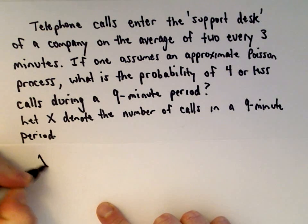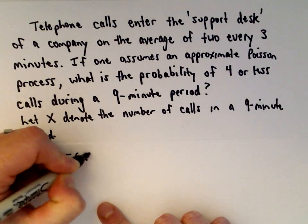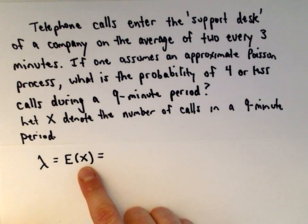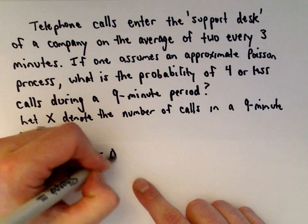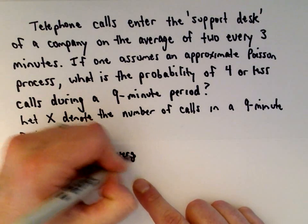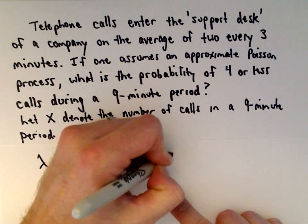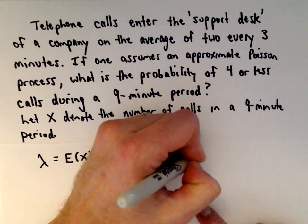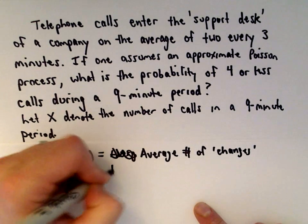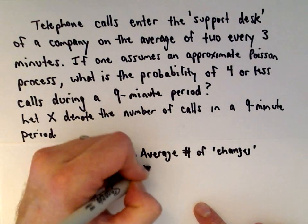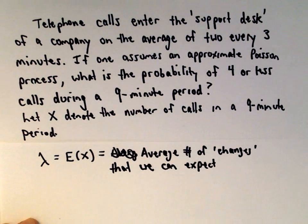Lambda is the expected number of occurrences in x — it represents the average number of changes we can expect over the given interval.